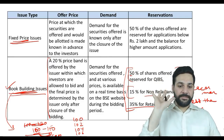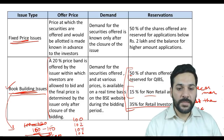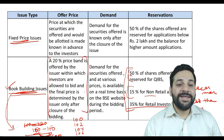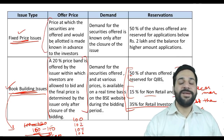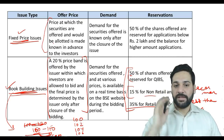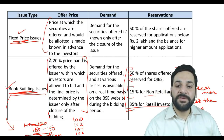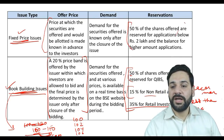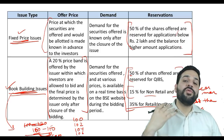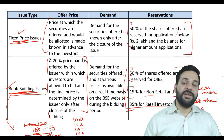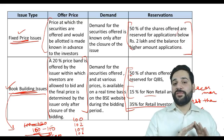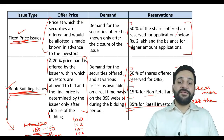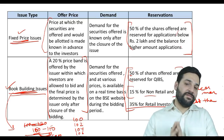In a fixed price issue, the offer price is determined by the company. 50% of shares are reserved for investors making an investment of two lakh or more, and the rest of the issue is reserved for retail investors.